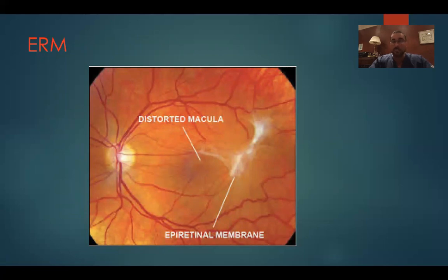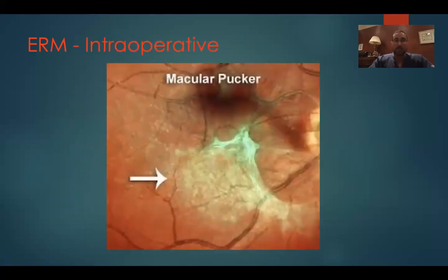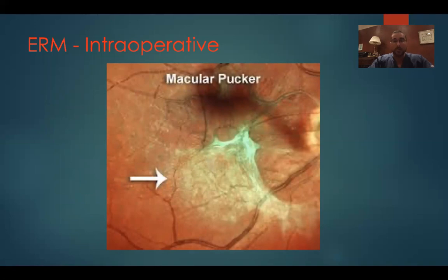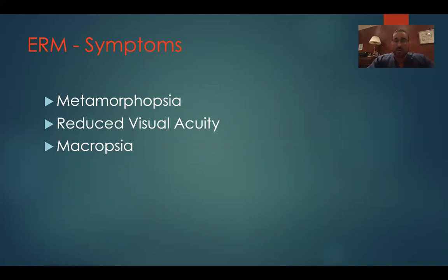On an OCT you might also see cystoid spaces resulting from leakage and from the mechanical traction. The symptoms of epiretinal membrane typically include metamorphopsia or visual distortion that can be documented on an Amsler grid, reduced visual acuity, and macropsia. The first two we typically see with other vitromacular tractional conditions, but macropsia is something that's relatively specific to epiretinal membrane. So if a patient presents with that symptom, you want to be looking for this.